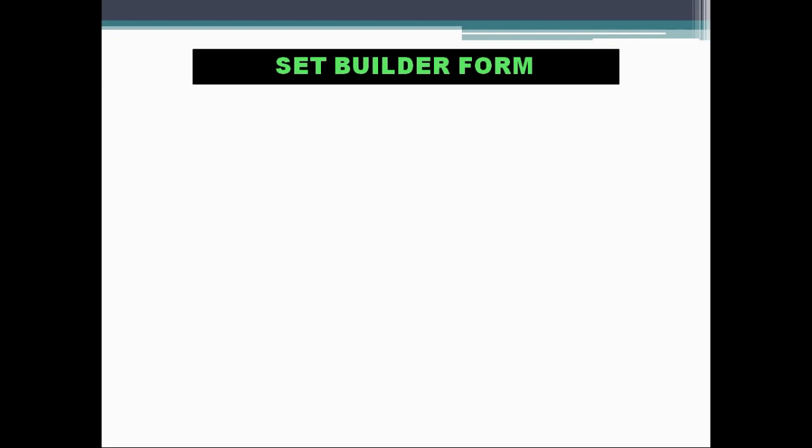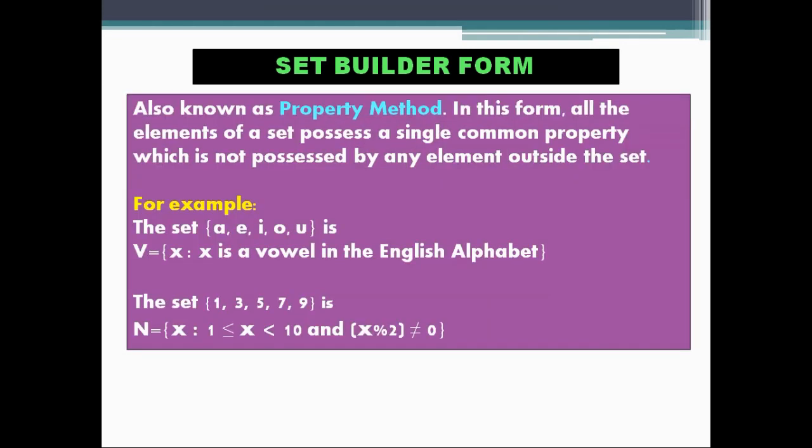Now let's see about the set builder form. Here we will talk about set builder form. Let's see the definition. Set builder form is also known as property method. In this form, all the elements of a set possess a single common property which is not possessed by any element outside the set. It means in set builder form, all elements pose a single common property.